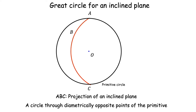A more general inclined plane in a stereographic projection is represented by a great circle which passes through two diametrically opposite points of the primitive. For example, shown here in red is ABC, a great circle which is an inclined plane, and it passes through A and C, which are diametrically opposite points of the primitive.